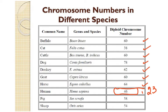A pig has 38 chromosomes (19 pairs) and a sheep has 54 (27 pairs). Every species has a fixed number of chromosomes — plants too, such as rose bushes, sweet peas, oak trees, mango trees, and potato plants all have different chromosome numbers. Every species has a unique fixed chromosome number that varies from species to species.